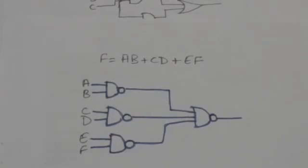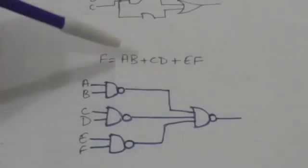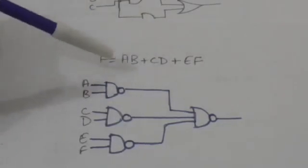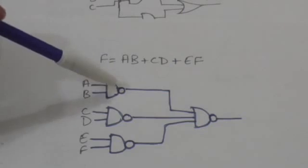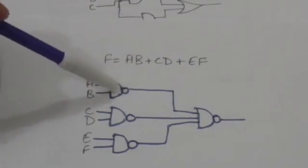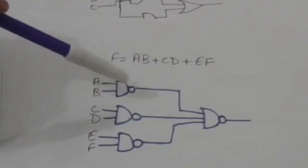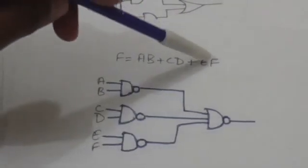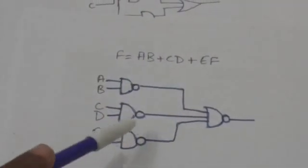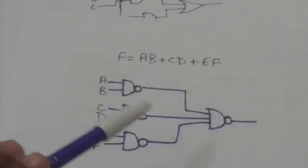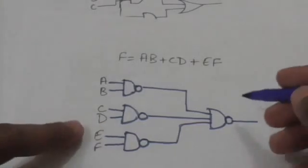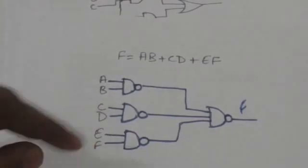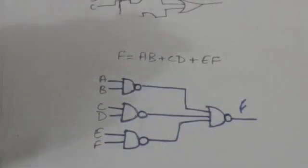Suppose there is a function F which equals AB plus CD plus EF, and we have to implement this function using NAND gates. There are three AND terms, so we need three NAND gates — one for each term. The first NAND gate is for term AB with inputs A and B, the second is for term CD with inputs C and D, and the third is for term EF. The outputs of all these NAND gates are connected to the input of a single NAND gate, and the output of that NAND gate is F. Thank you very much.